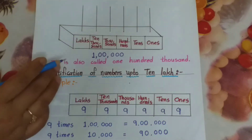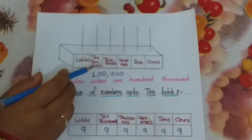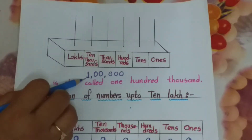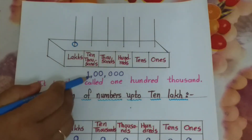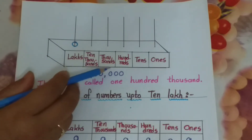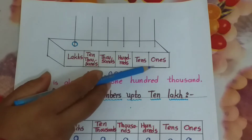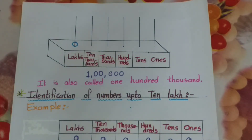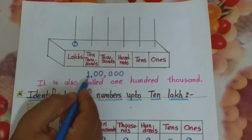Now on 1 lakh, we have to show it on the abacus. The place values are: lakhs, 10,000s, thousands, hundreds, tens, and ones. On the lakh place, 1 is there, so we draw 1 bead here. On 10,000s place — no beads. On thousands — no beads. On 100s place, 0 — no beads. Tens place, 0 — no beads. Ones place, 0 — no beads. It is also called 1,00,000.